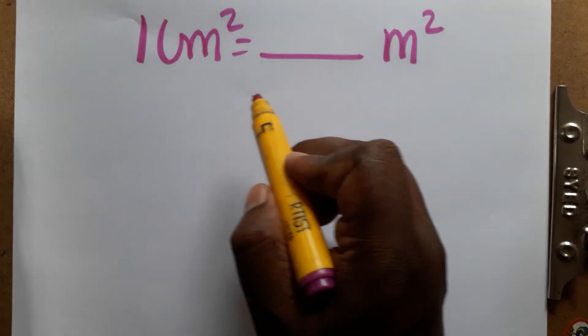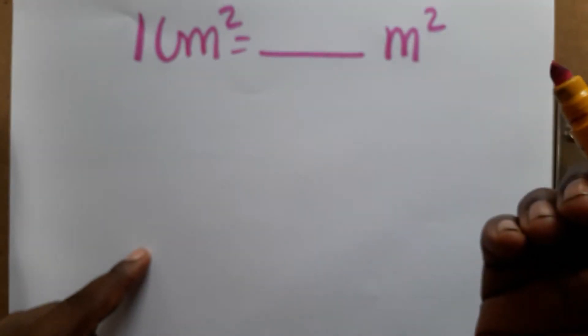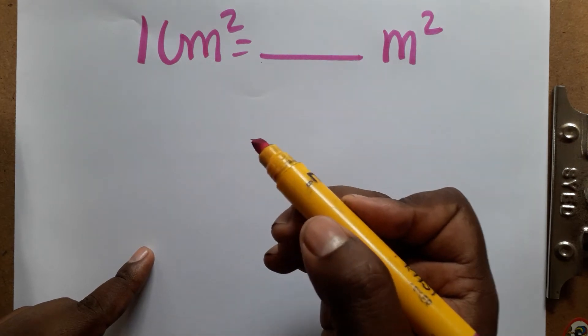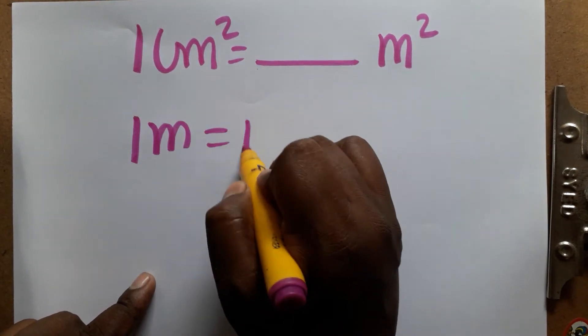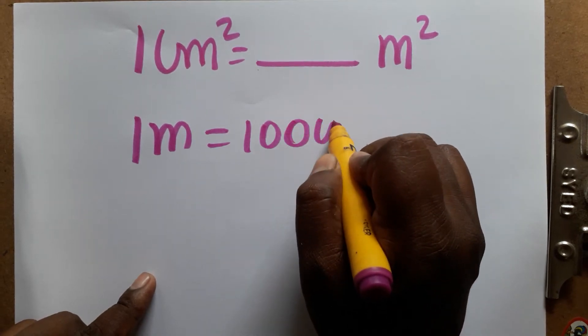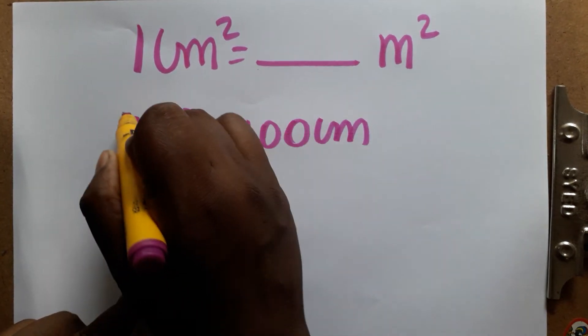Today we are going to learn: 1 centimeter squared is equal to how many meter squared? If you like my channel, please subscribe. So, 1 meter is 100 centimeters, so 1 meter squared, we'll take it as